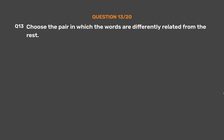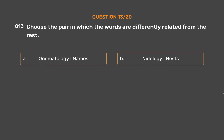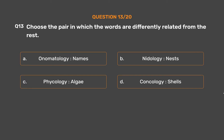Question number 13. Choose the pair in which the words are differently related from the rest. Option A: Sonomatology, Names. Option B: Nidology, Nests. Option C: Phycology, Algae. Option D: Conchology, Shells.